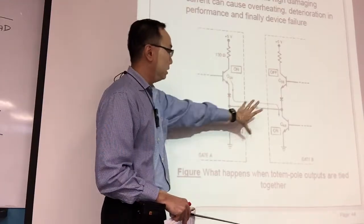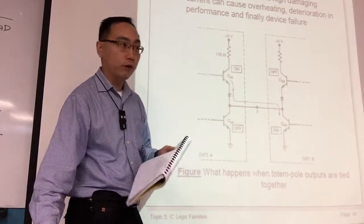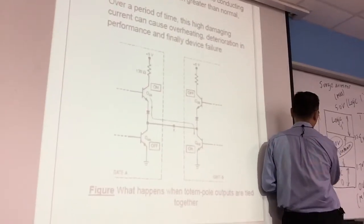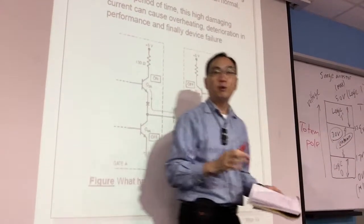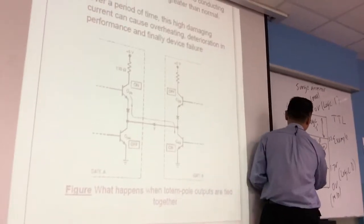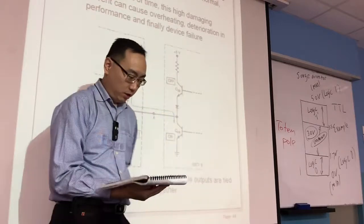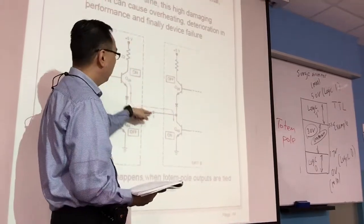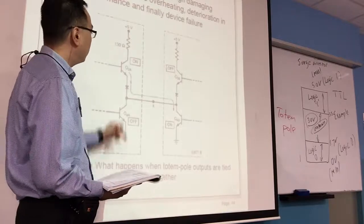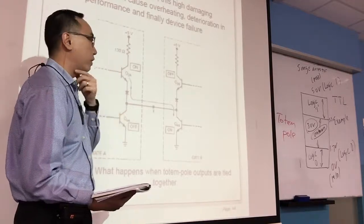Now this is called a totem pole output. Totem pole, T-O-T-E-M. Don't ask me why they use this name, probably named after somebody who discovered this name. Okay, what it means is that when you have this kind of output, when you have this right, now it is not advisable to short them together. Okay, this configuration right actually, it's not very good.